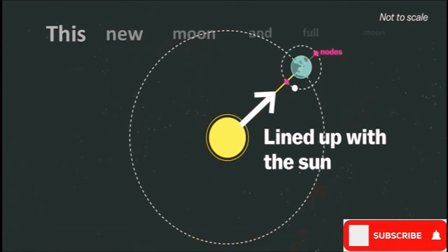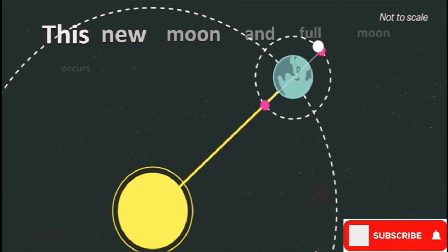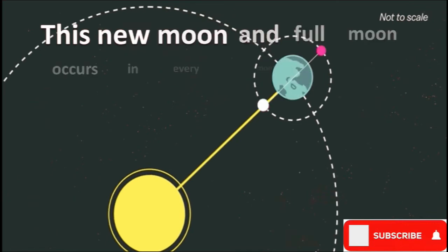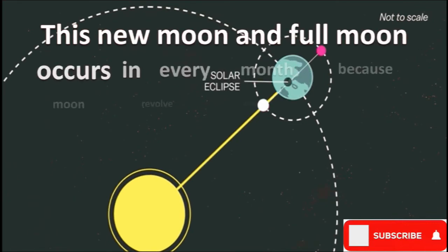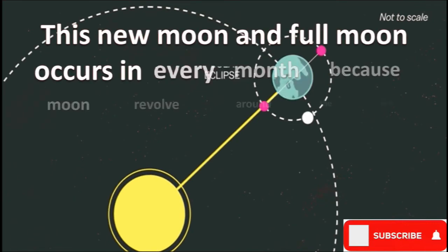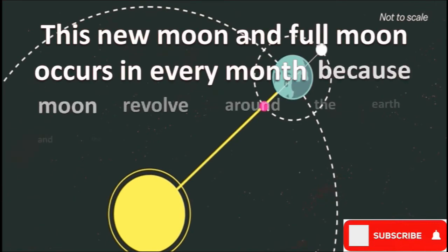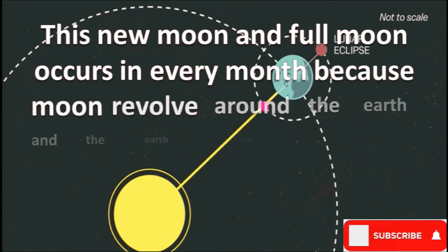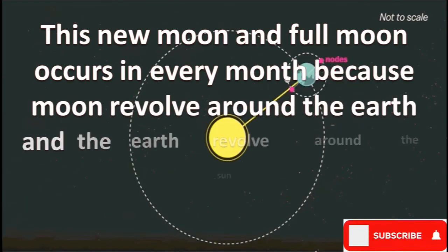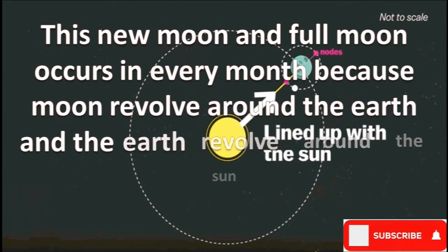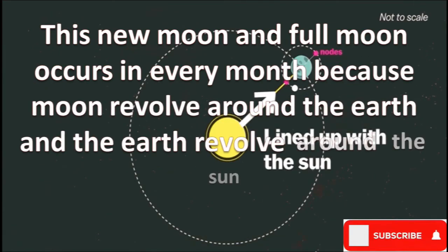This new moon and full moon occurs every month because the moon revolves around the earth and the earth revolves around the sun.